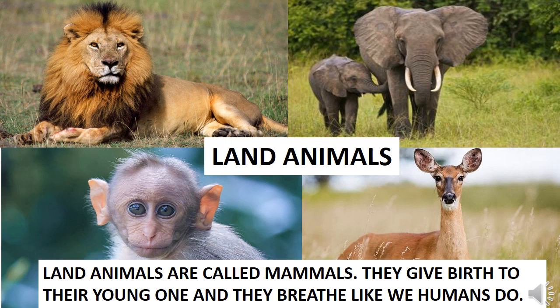Land animals are called mammals. Can you spell it out with me? M-A-M-M-A-L-S. Mammals. Animals who walk on land are called mammals. They give birth to their young ones and they breathe like we humans do. So we also walk on land — are we mammals too? Think about it, children. I will ask this in the next video.